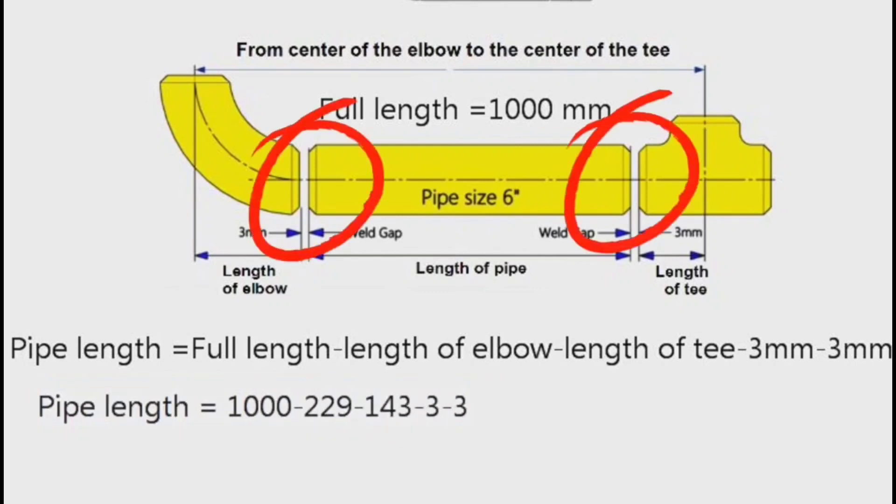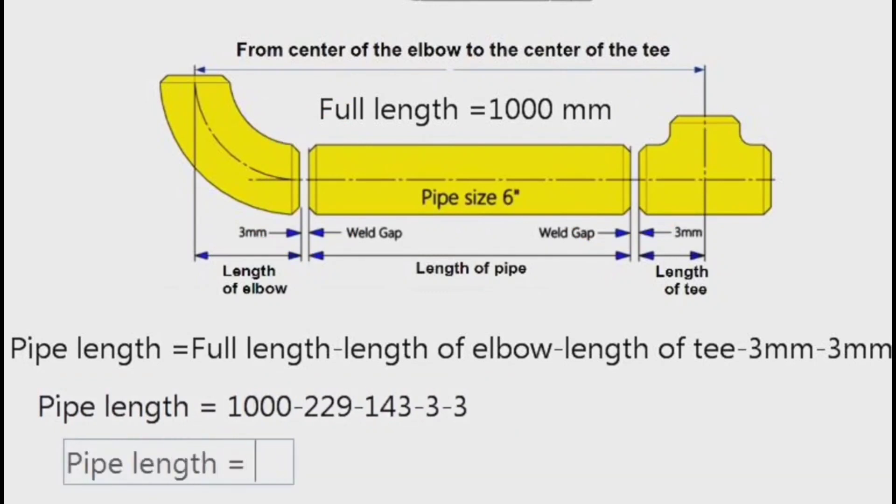Here, 3mm are weld gaps which are used in the fit-up stages. We calculate and find that the length of the piece of pipe is 622mm. In other words, the length of the pipe piece used in this pipeline is 622mm.